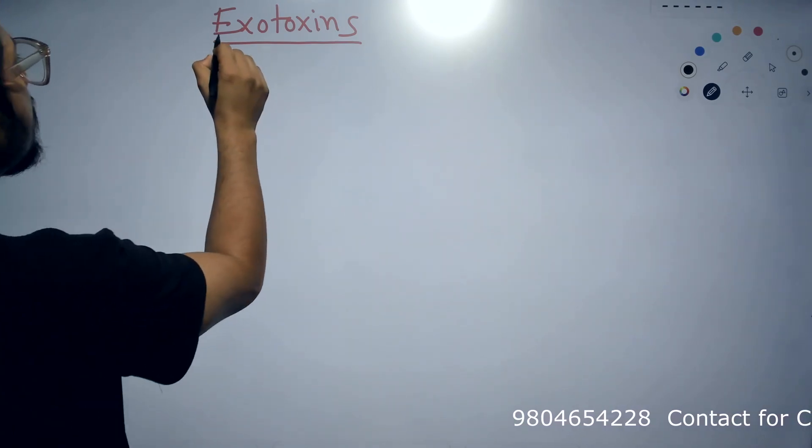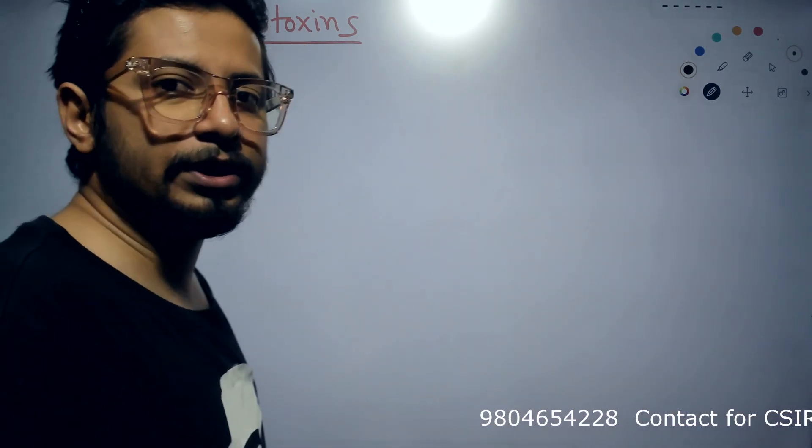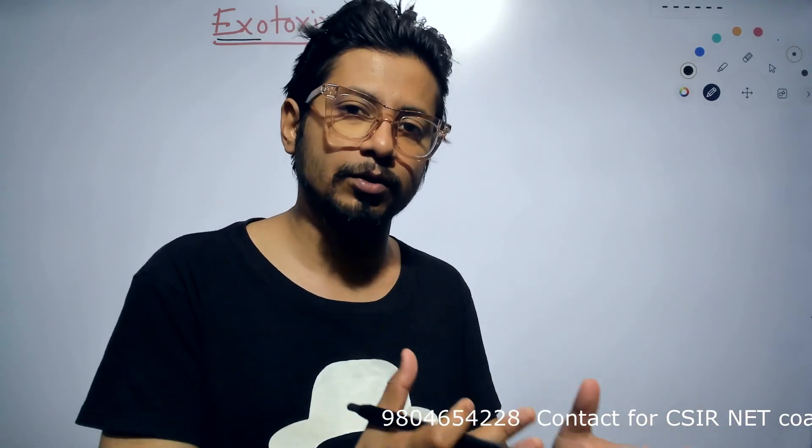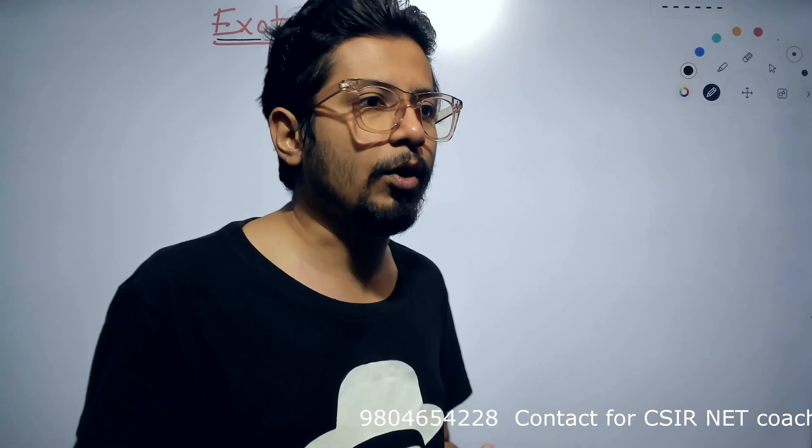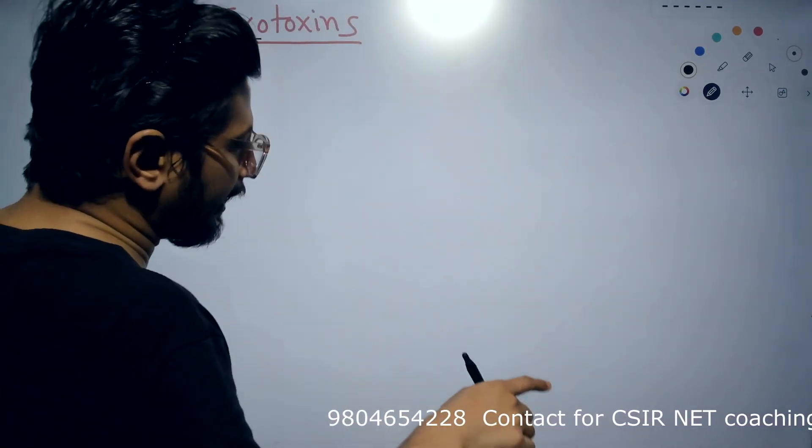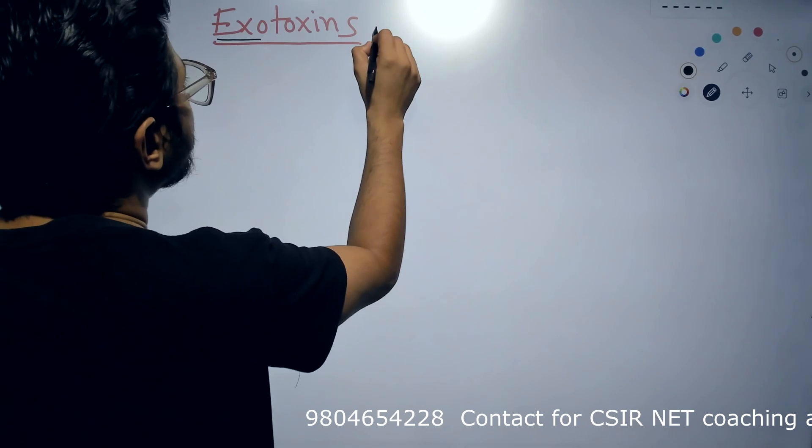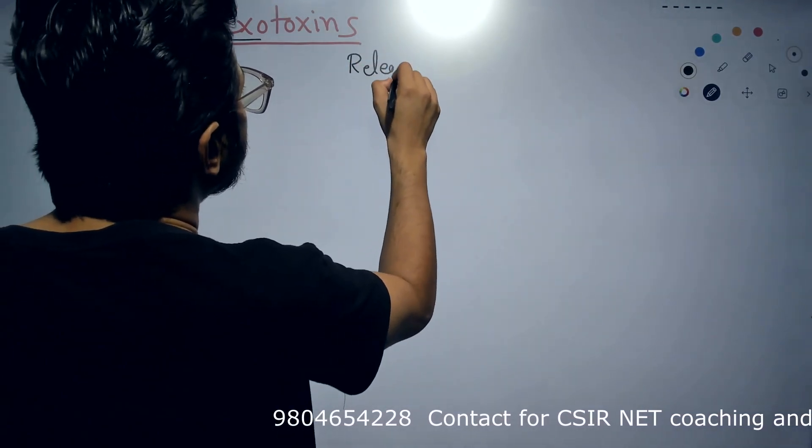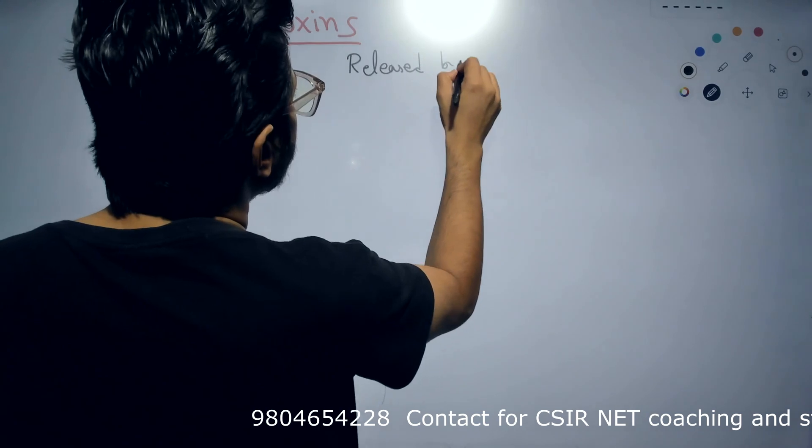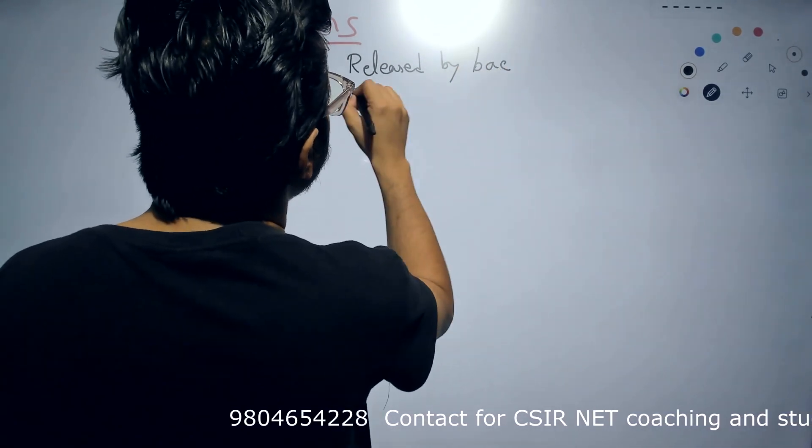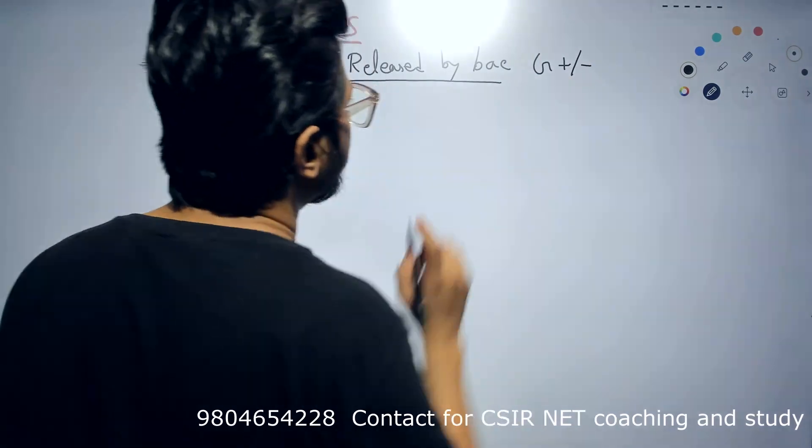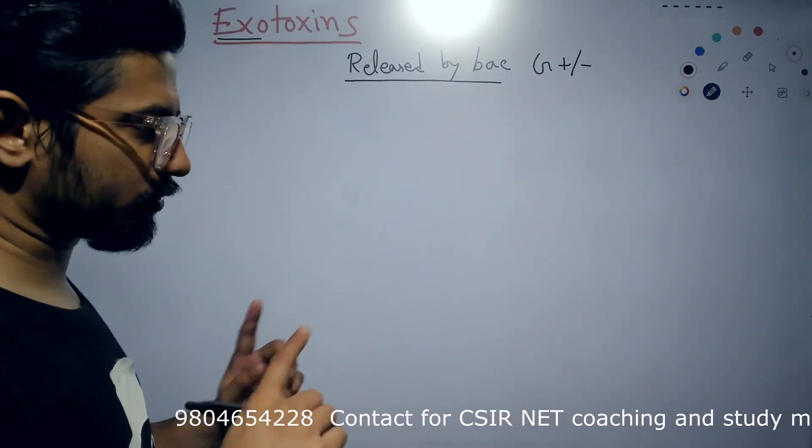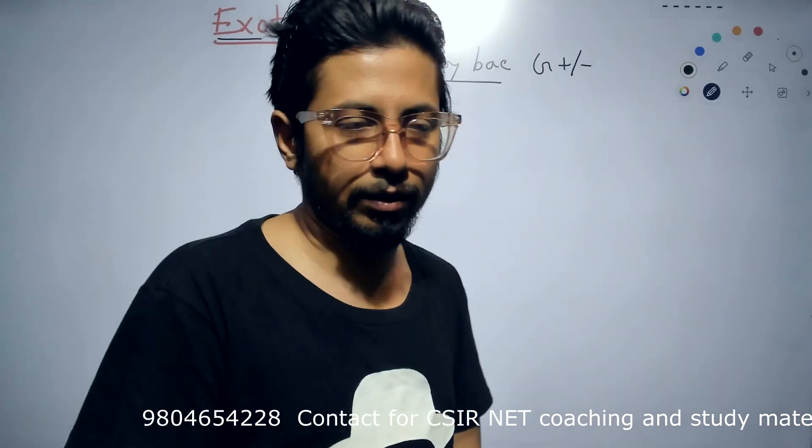Exotoxins, as the name suggests, exo means the exogenous origin of the toxin. While endotoxin is a part of bacterial cell, gram-negative bacterial lipopolysaccharide layer, the outermost layer, that was endotoxin. But exotoxin is something that is produced by bacteria, which can be released by bacteria, either gram-positive bacteria or gram-negative bacteria. Both of them can produce and release the exotoxin outside.